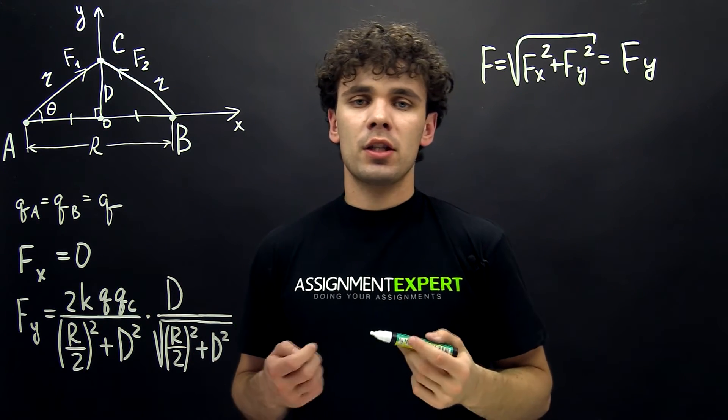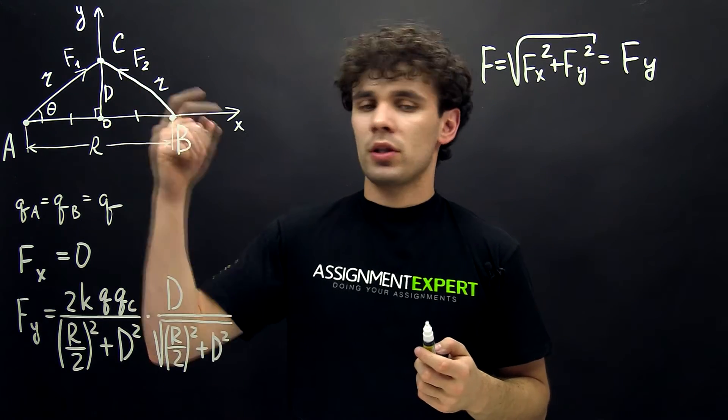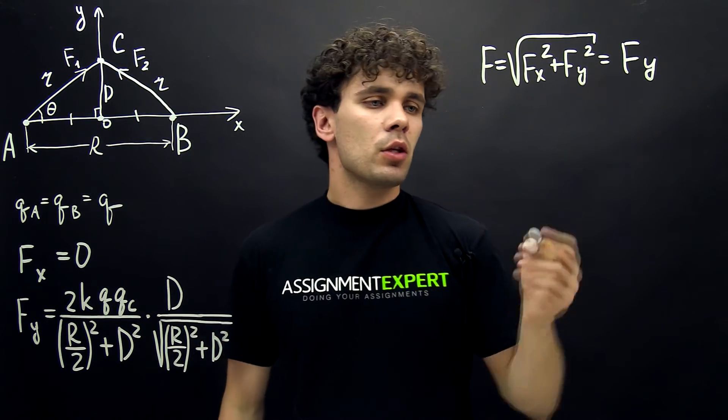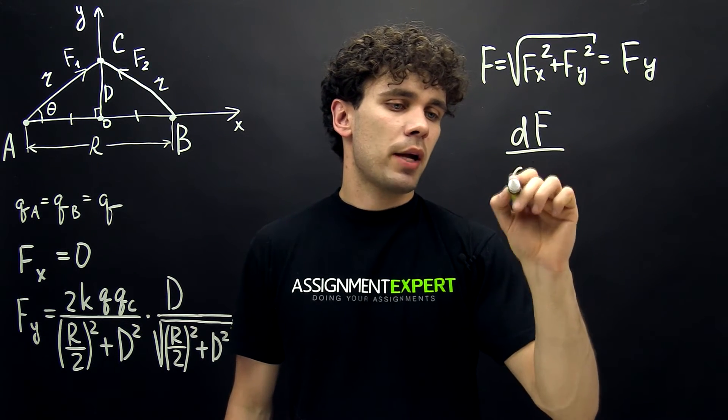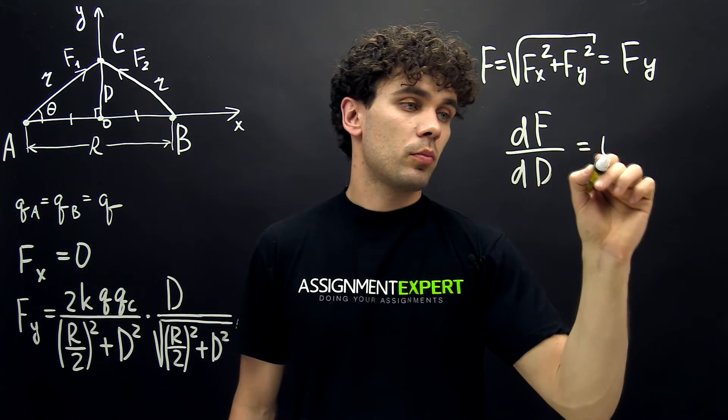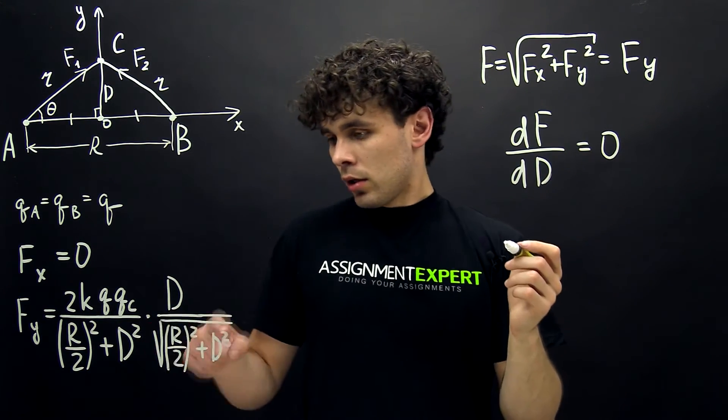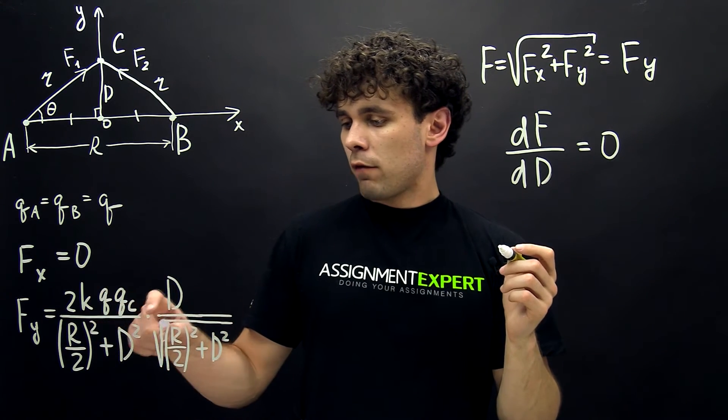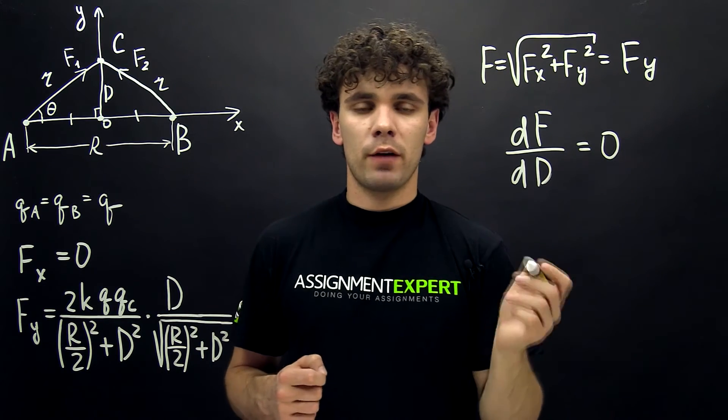Now let's find the distance D at which the electrostatic force applied to point C is maximum. This means that the derivative of the electrostatic force with respect to distance D equals zero. And this gives us the following. In this expression, we have this term in the numerator which doesn't depend on D, so we can factor it out.